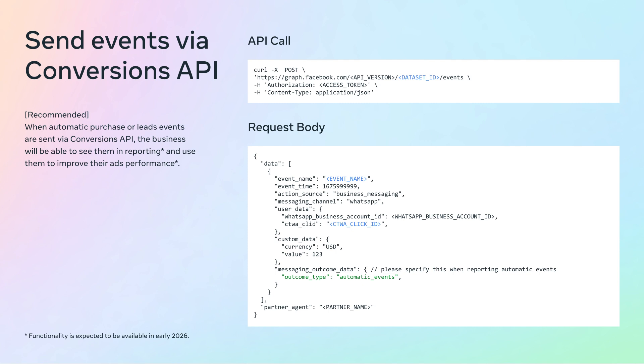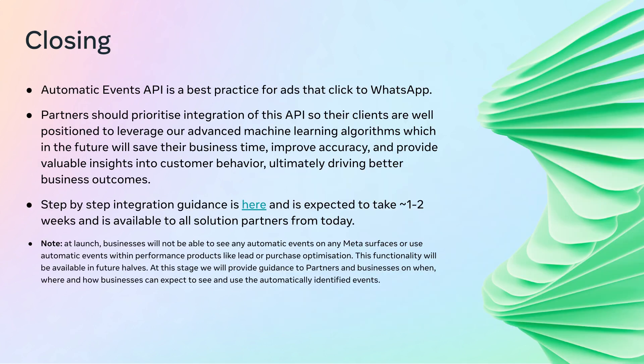With that, I've covered all the technical integrations required for the Automatic Events API. Let's sum up. Integrating this API should be a priority for you. By doing so, you can take full advantage of our advanced machine learning algorithms to provide valuable insights into customer behavior. For those ready to integrate, step-by-step guidance is available today and the process is expected to take one to two weeks. It is important to note that you will not see automatic events on Meta surfaces or use them within performance products like lead or purchase optimization yet — these functionalities will be rolled out in future phases. Thank you for your attention, and we look forward to seeing how you leverage the Automatic Events API to drive success for your client businesses.